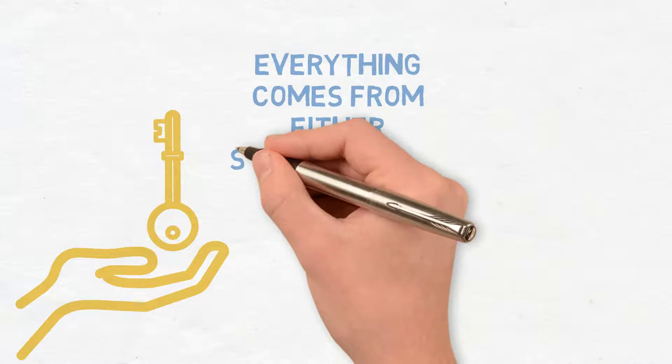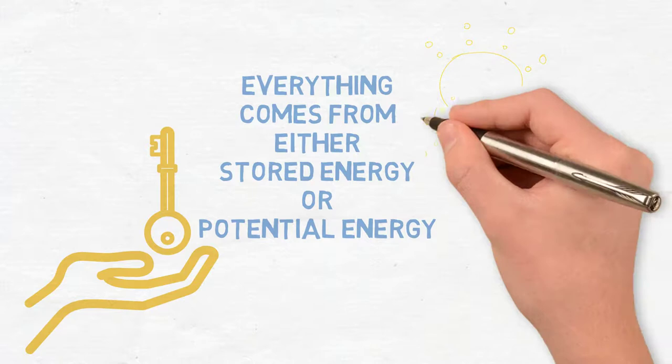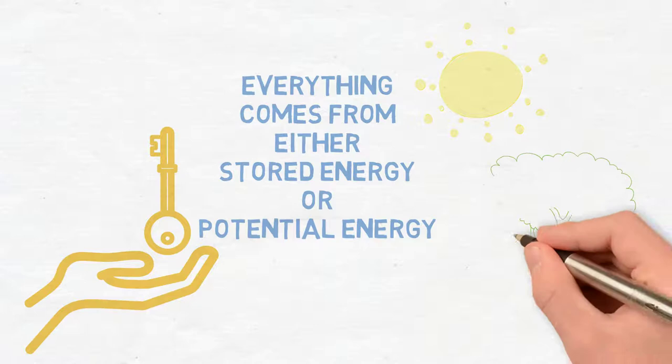And basically, the key is to understand that everything comes from either stored energy or potential energy, or most of the time from sun energy and photons, which are transformed as nature needs in different shapes and behavior.